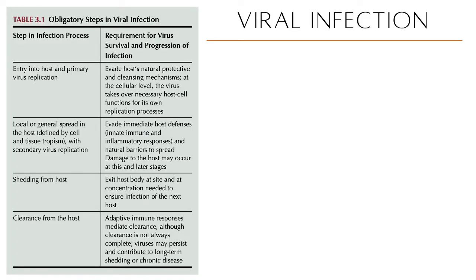For viruses to cause disease, they must first infect their host, spread within the host, and damage their target tissues. To ensure propagation, the viruses must then be transmitted to other susceptible individuals, which means they must be shed within secretions or excretions into the environment, taken up by another host or a vector, or passed congenitally from mother to offspring.